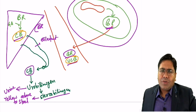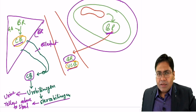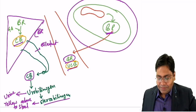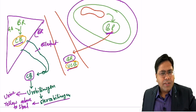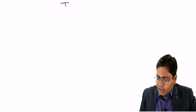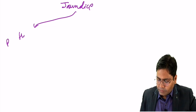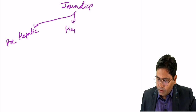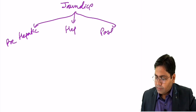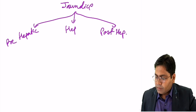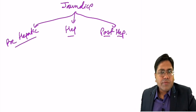Now what happens in jaundice? Some form of bilirubin will be raised. We need to understand the different types of jaundice. Jaundice is classified by its cause as pre-hepatic, hepatic, and post-hepatic jaundice. These are the three types of jaundice.